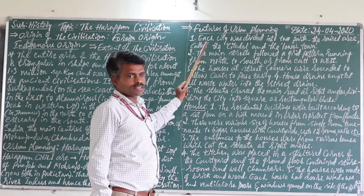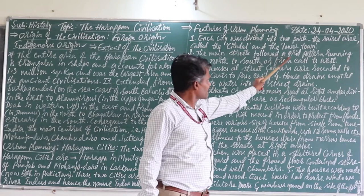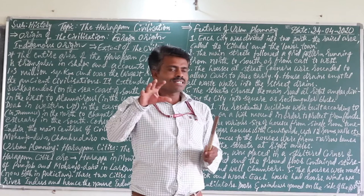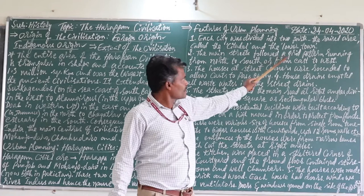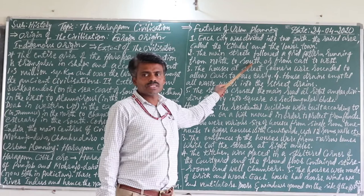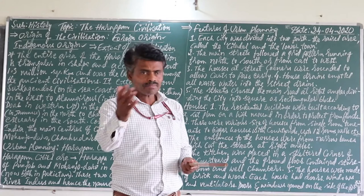The second characteristic: the main streets followed a grid pattern. Grid means a rectangular pattern. The main streets followed a grid pattern running from north to south or from east to west. Those days they focused on directions also. By taking a well-equipped plan, they constructed the roads and cities, and even gave importance to directions.